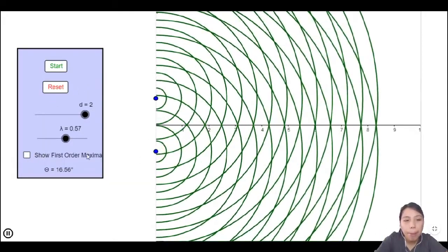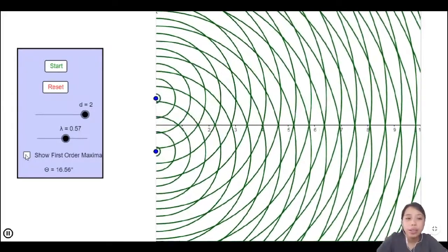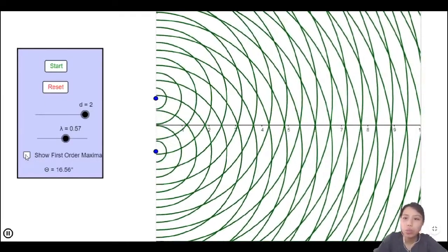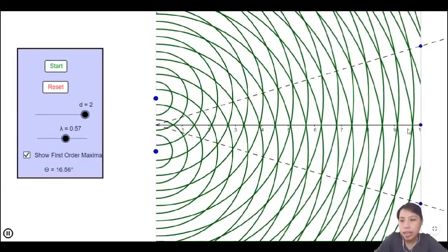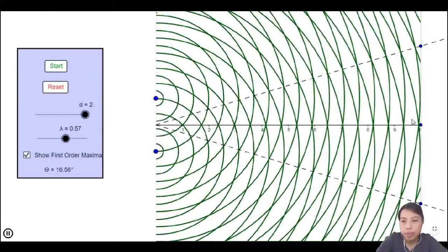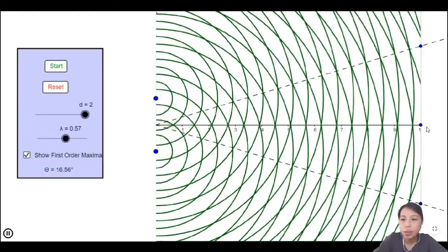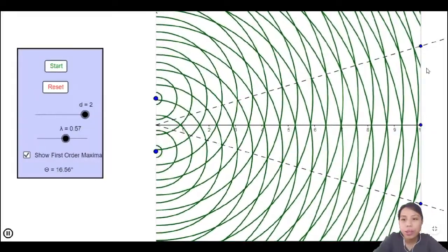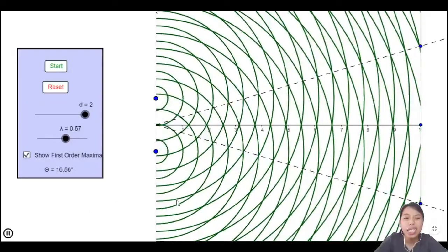Now you need to know what are maxima. You see this first order maxima, what does that mean? Maxima means bright spots where you have constructive interference. Can you see the patterns? So if I enable this, this center line is where you have constructive interference. All these green lines you see are crests. And also, you will have what we call bright fringes here, here and here. These are the maxima. So this zero order, first order maxima, first order maxima.